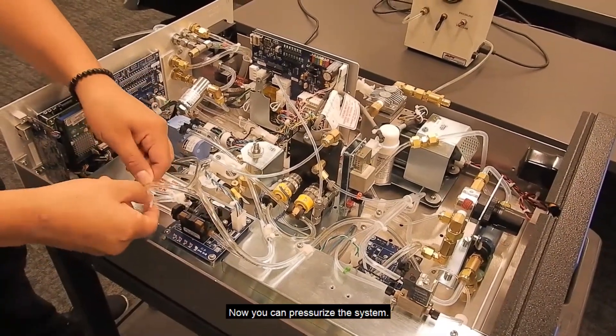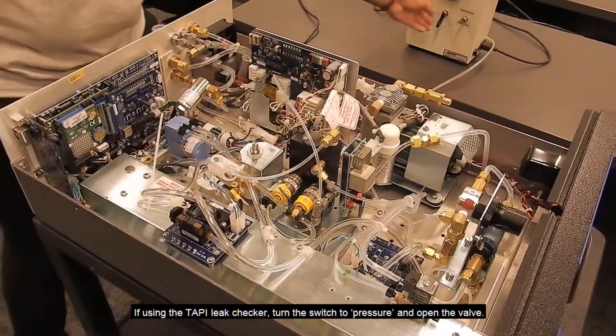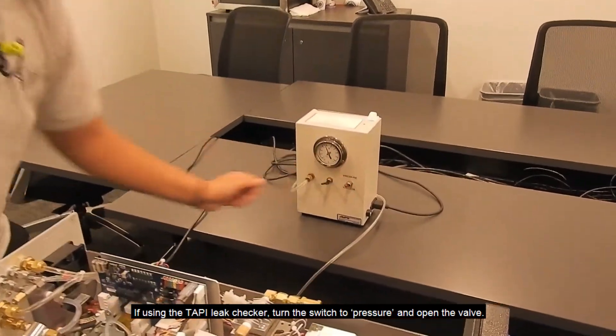Now you can pressurize the system. If using a TAPI leak checker, turn the switch to pressure and open the valve.